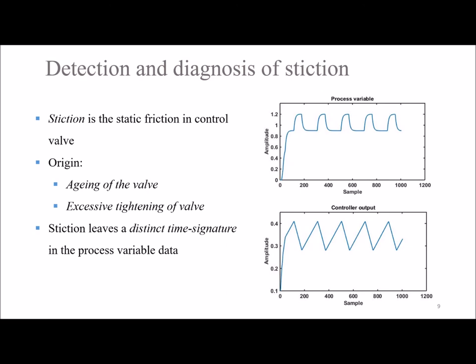Other causes include tight packing, addition of foreign material, lubricant depletion, etc. Stiction in a control valve leaves a distinct time signature in shapes like square, triangular, trapezoidal, etc., for the process variable.